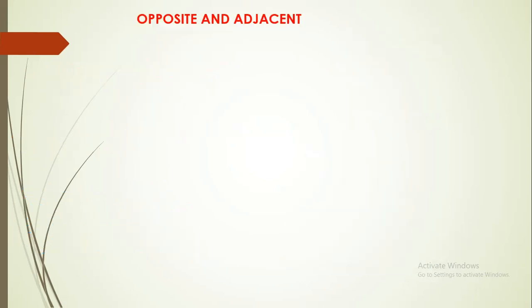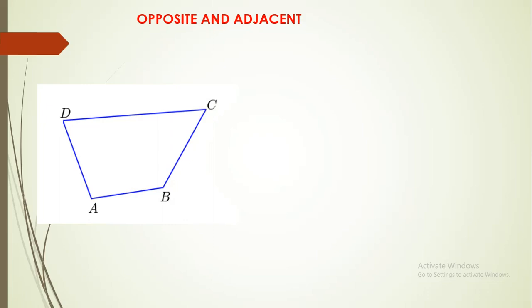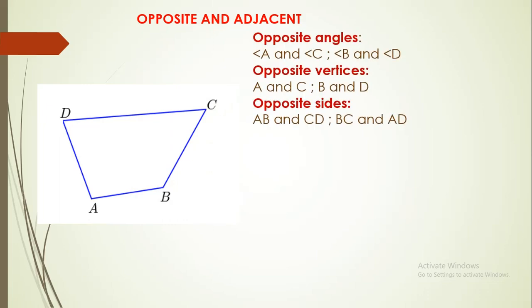Opposite and adjacent. Opposite means facing each other. Adjacent means side by side. Look at this quadrilateral. What are the opposite angles? Angle A is opposite to angle C, and angle D is opposite to angle B. The same way for opposite vertices — A and C are opposite vertices, and B and D are opposite vertices.